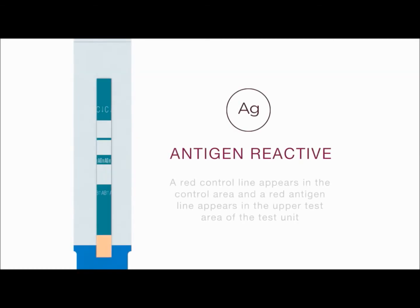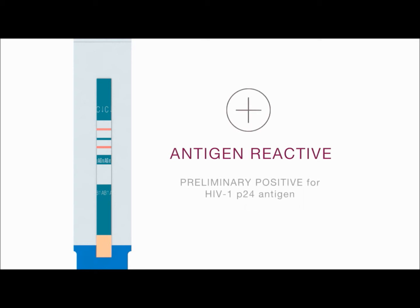Antigen reactive: a red control line appears in the control area and a red antigen line appears in the upper test area of the test unit. The intensity of the antigen and control lines may vary. Any visible red line in both the control and upper test areas, regardless of intensity, is considered reactive. A reactive test result means that HIV-1 P24 antigen has been detected in the specimen. The test result is interpreted as preliminary positive for HIV-1 P24 antigen. A test result that is preliminary positive for HIV-1 P24 antigen in the absence of reactivity for HIV-1 or HIV-2 antibodies may indicate an acute HIV-1 infection in the test subject.